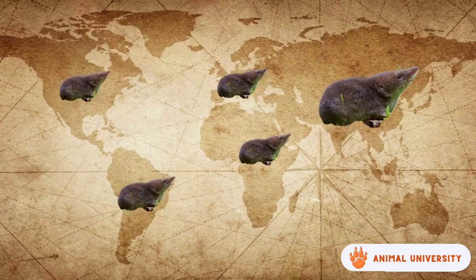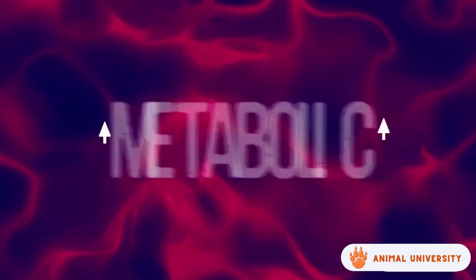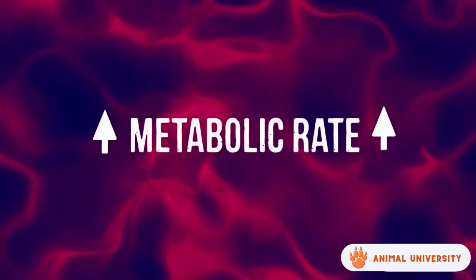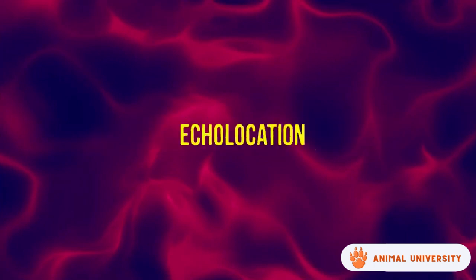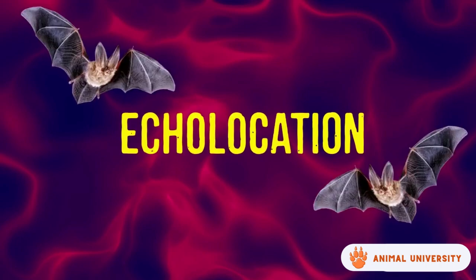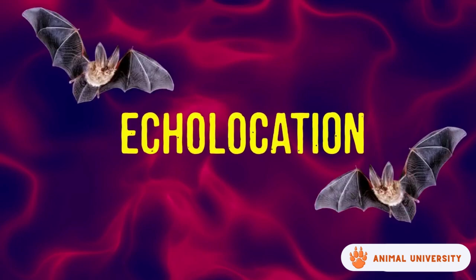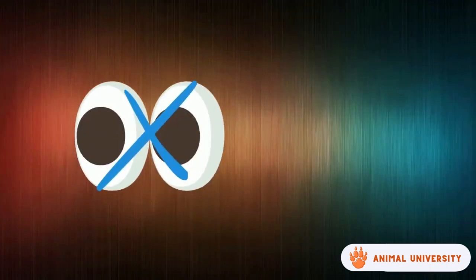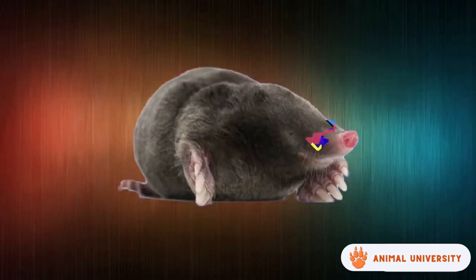True shrews are found worldwide except in Australia. They have a high metabolic rate, that's why they consume a lot of food. They have the ability of echolocation like bats, resulting in them having terrible eyesight.